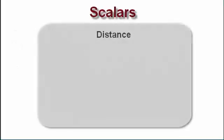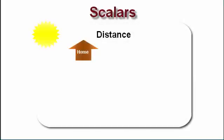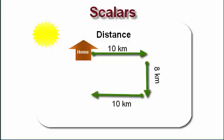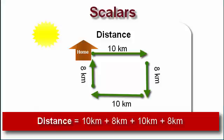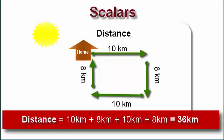Let's take distance for example. Say it's a nice sunny day and you decided to take a drive around your neighborhood. You drive 10 kilometers east, then 8 kilometers south, 10 kilometers west, and then 8 kilometers north back to your house. To calculate the distance traveled, you simply add 10, 8, 10, and 8 kilometers, finding a total of 36 kilometers. You can see that direction didn't matter — only the magnitude of the quantity.